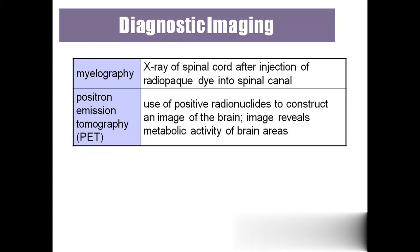'PET — positron emission tomography' is used to see the metabolic activity of the brain — whether the brain areas are active or not. They use positive radionuclides to construct an image of the brain, showing which parts are functioning and which are not. PET is particularly taken during CVA — cerebrovascular accident — or during a brain stroke.